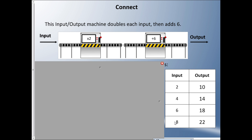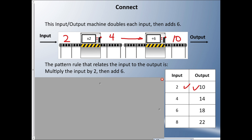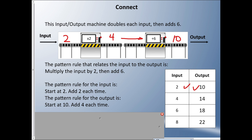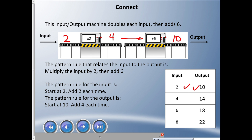Now we have two operations in this input-output machine. This machine doubles the input by multiplying by two, and then adds six. If I input two: two times two is four, then four plus six gives an output of ten. The pattern rule relating input to output is: multiply the input by two, then add six. The pattern rule for the input is start at two, add two each time. The pattern rule for the output is start at ten, add four each time.